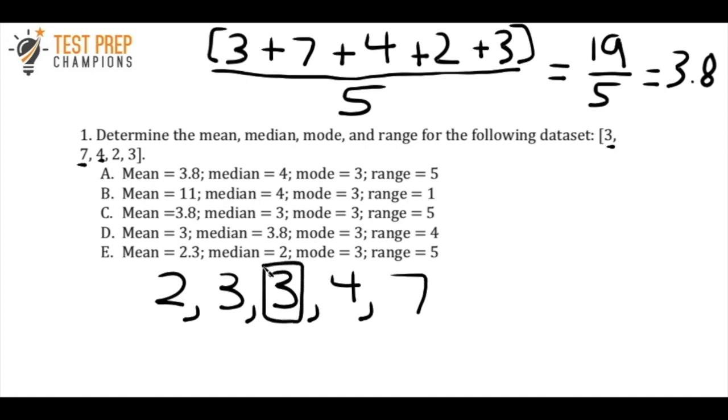All right, and so whenever you've got an odd number of numbers in your data set, which we do because we have 5, you just put them in order from smallest to largest, and the one right in the middle here is going to be the median.